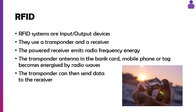RFID devices are both input and output devices. Your phone sometimes has them, and swipe cards to get into a college or security room will have them. Inside that card there is a transponder and a receiver. When you get near an RFID reader, it emits a burst that turns on the chip in the RFID card, and then the transponder antenna inside your card will essentially send data.